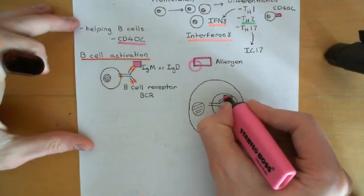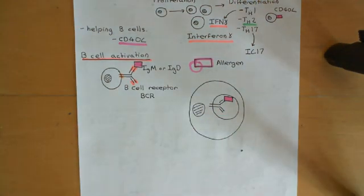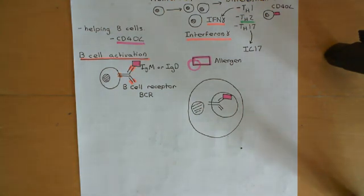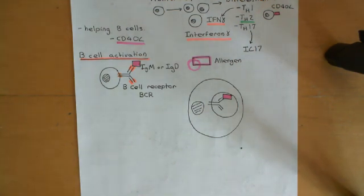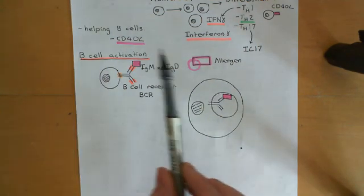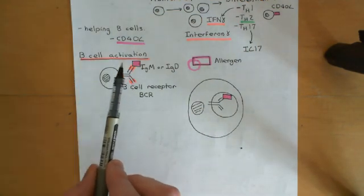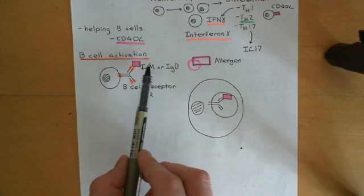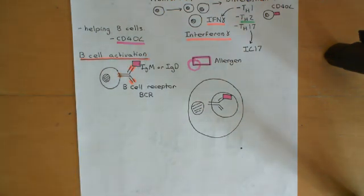The B-cell is going to chop up that allergen molecule and present fragments of it on its surface on MHC class II molecules. The core message here is that B-cells cannot just activate on their own. You might think now surely the B-cell is just going to activate — it's found its allergen — but the answer is no, it's not allowed to. It has to run it by helper T-cells.